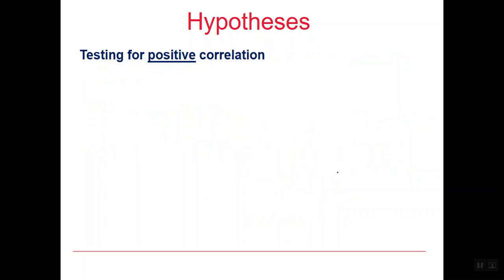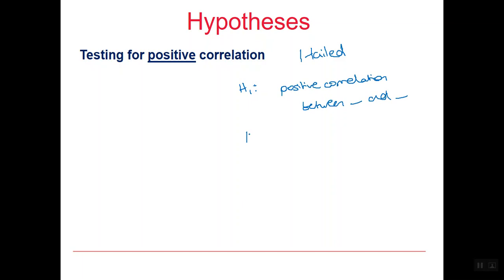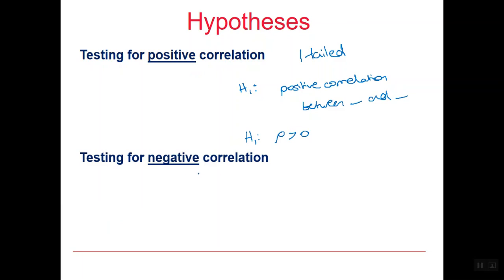If we were testing for a positive correlation, this would be a one-tailed test because we know the direction. We could say the alternative hypothesis is that there is positive correlation between our two variables, or that rho is greater than zero. Or we could be testing for negative correlation, in which case the alternative hypothesis is that there is negative correlation between our two variables, or that rho is less than zero.